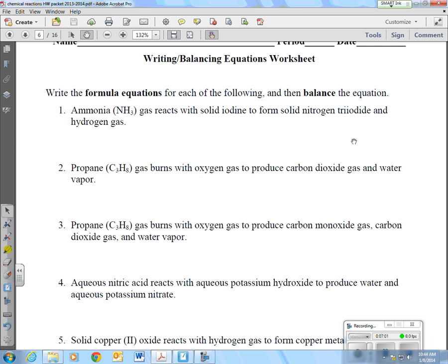So let's do another example. Writing or balancing equations worksheet. So write the formula equations for each of the following and then balance. I'll just do number one with you for more practice. I highly recommend doing all of these on this sheet. So ammonia, which is NH3. It tells me it's a gas, so I'm going to write G. Reacts with, means plus sign. Solid iodine. So remember, iodine is a diatomic, so you need a little 2 there. And because it's solid, we need an S.